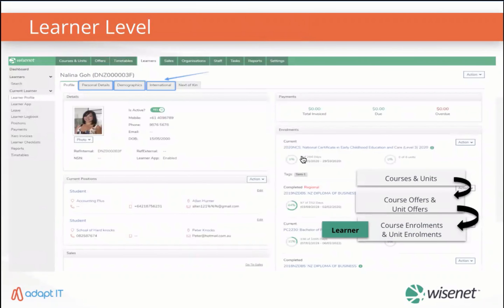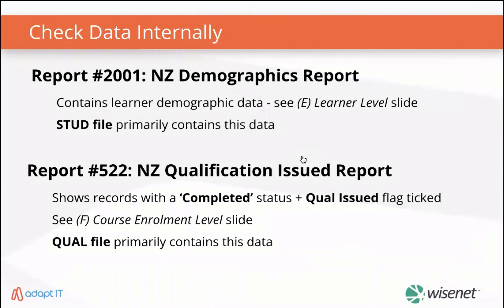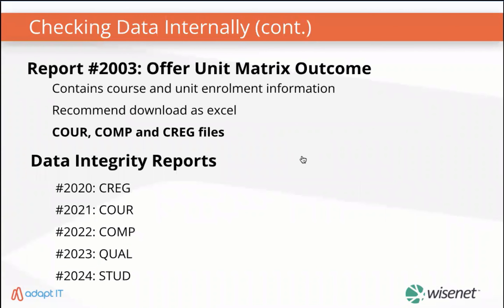The learner profile contains important information about the learner's personal contact details, mobile address, NSN, healthcare details, fees-free citizenship, demographic information and passport country for international learners — click through the tabs to add all the information as required. It's always a good idea to run reports internally to check your data. The 2001 demographic report contains all demographic data required for your STUD file and will help you identify any gaps. The 522 report provides information regarding qualifications issued with a completed status and the qual issued flag ticked. The 2003 is also a very useful report to get information regarding course and unit enrollments, including outcomes and results.